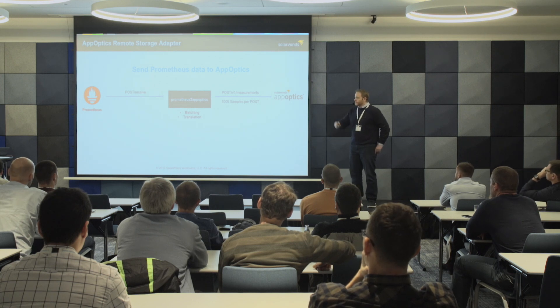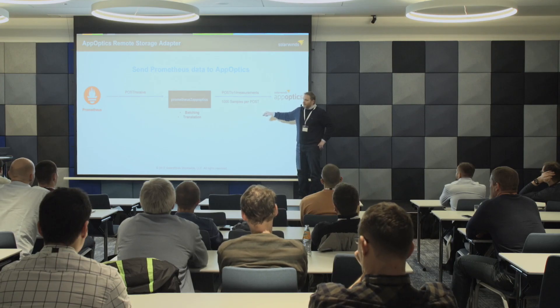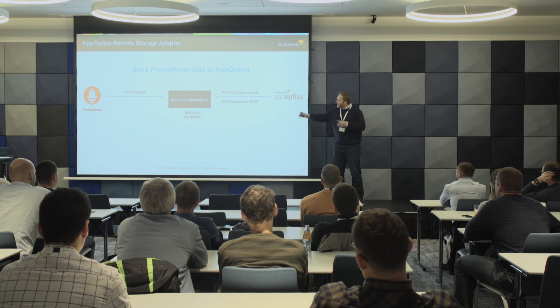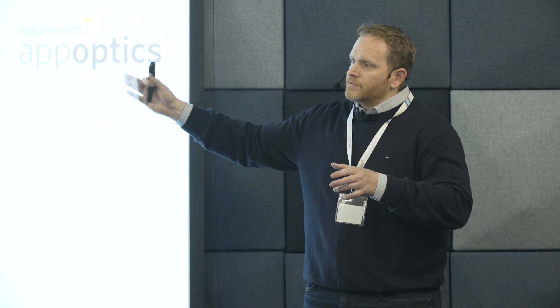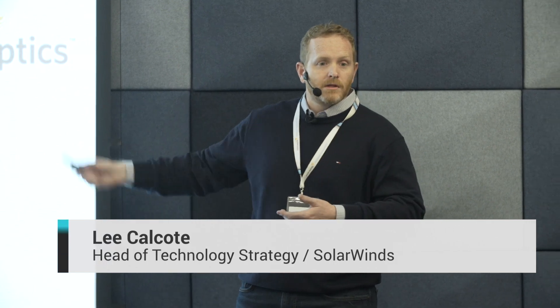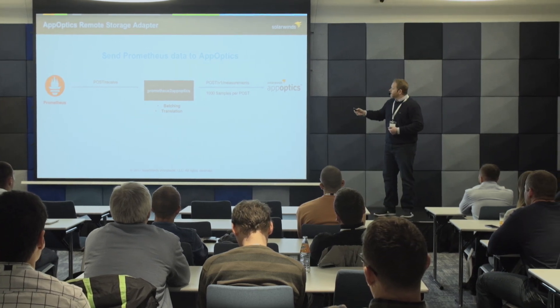Given that this is an interesting space to us, we went ahead and wrote one — thanks to Trevor Rosen. It's a small Go binary, deployable as a Docker container. It handles ingestion of metrics, batches them up, and translates between how Prometheus uses labels to tag each metric with various dimensions. For example, a node you're scraping might be in AWS, EU West 1, and production — so you label it with those dimensions. We need to translate Prometheus labels into tags in our system. That system is a new product we just launched at re:Invent called AppOptics.